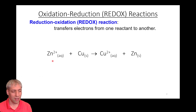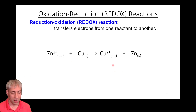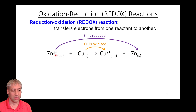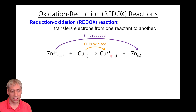Look at this reaction: Zn²⁺ and Cu⁰ on one side, Cu²⁺ and Zn⁰ on the other. We're not making and breaking bonds or changing elements — we're only changing the number of electrons on those elements. Copper is being oxidized from Cu⁰ to Cu²⁺, giving up two electrons. Conversely, zinc is being reduced from Zn²⁺ to Zn⁰, gaining those two electrons.